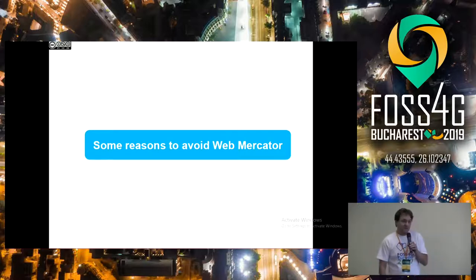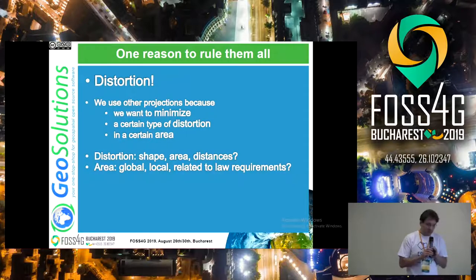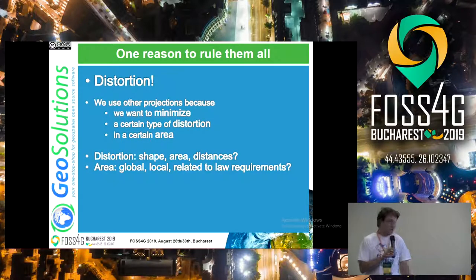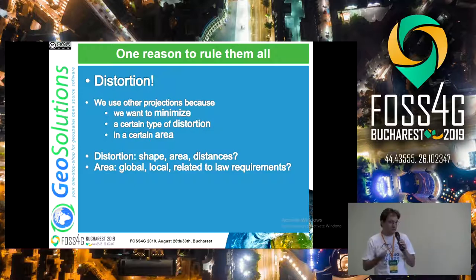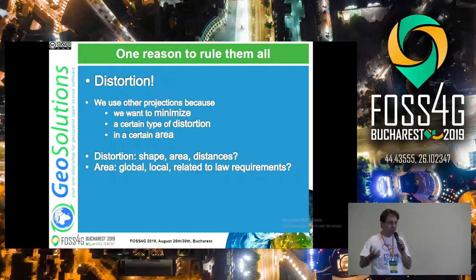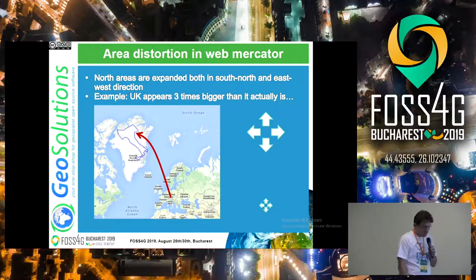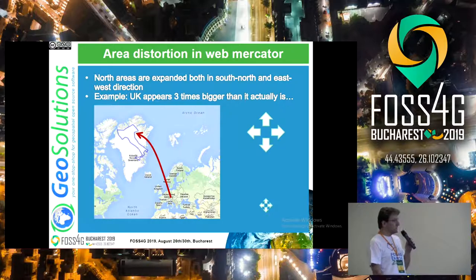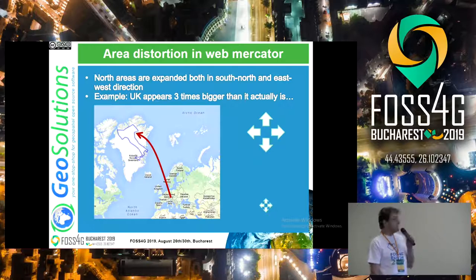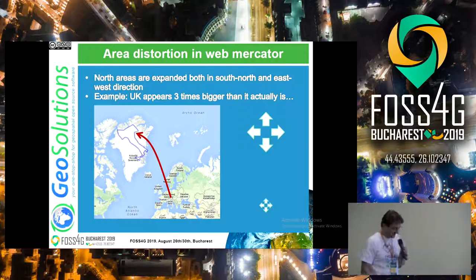Some reasons to avoid web Mercator. One reason to rule them all — the reason that Louis was talking about — distortion. Every map projection induces some distortion because we are going from a double curvature surface, which is the earth, to a flat surface. So we want to minimize a certain type of distortion in a certain area. Web Mercator distorts areas in a very significant way. If we took Italy and moved it atop Greenland, Italy would suddenly become so much bigger.